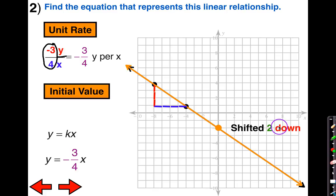Since this time it shifted 2 down, that is going to be a minus 2 instead of plus 2. So it's the same exact form except the only difference is we're subtracting 2 because we saw that there was a shift downwards. My equation would be y equals negative 3 fourths x minus 2.